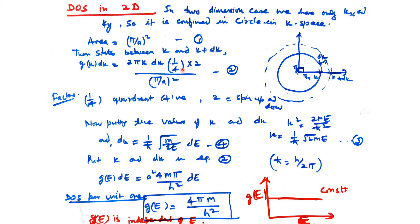Converting to energy space using K² = 2mE/ℏ² and dK = (1/ℏ)√(m/2E) dE, we substitute into the 2D expression. After simplification, G(E)dE = A² · 4πm/h² dE per unit area. Therefore G(E) = 4πm/h², which does not depend on energy. The energy versus G(E) curve is constant in the 2D case.